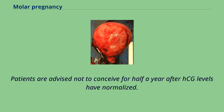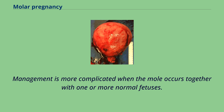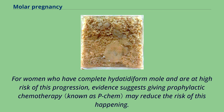Patients are advised not to conceive for half a year after HCG levels have normalized. The chances of having another molar pregnancy are approximately 1%. Management is more complicated when the mole occurs together with one or more normal fetuses. In some women, the growth can develop into gestational trophoblastic neoplasia. For women who have complete hydatidiform mole and are at high risk of this progression, evidence suggests giving prophylactic chemotherapy may reduce the risk of this happening.